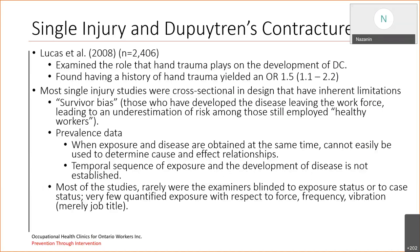A study by Lucas in 2008, with a sample size of 2,406 participants, examined the role that hand trauma plays in the development of Dupuytren's Contracture. They found a history of hand trauma had an odds ratio of 1.5 with a confidence interval between 1.1 and 2.2. Most single hand injury studies are cross-sectional in nature, and there are some inherent limitations with cross-sectional studies where both the exposure and the disease are present at one time. One would be survivor bias — those who have developed the disease will inevitably be leaving the workforce, leading to an underestimation of risks among those still employed.